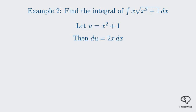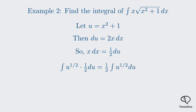If u = x² + 1, then du = 2x dx. Our integral has an x dx, so we can solve for it: x dx = (1/2) du. Now we can rewrite the entire integral in terms of u. It becomes the integral of √u times (1/2) du. This simplifies to (1/2) times the integral of u^(1/2). The integral of u^(1/2) is u^(3/2) divided by (3/2), which is the same as multiplying by 2/3. So our integral is (1/2) × (2/3) u^(3/2) + C, leaving us with (1/3) u^(3/2) + C.